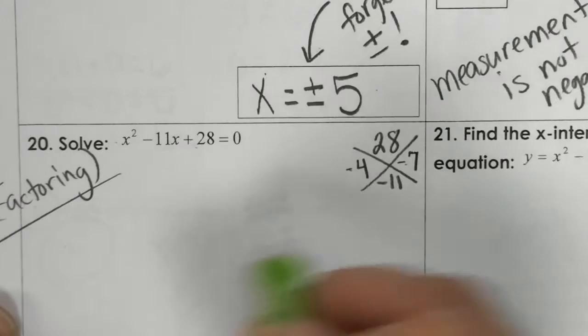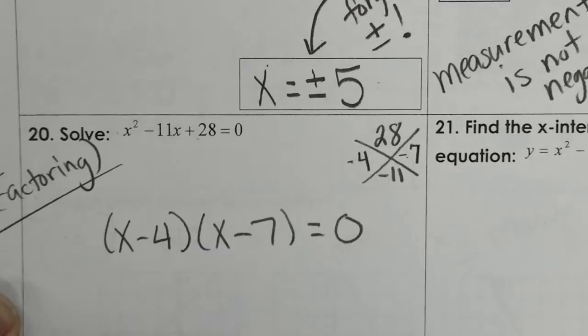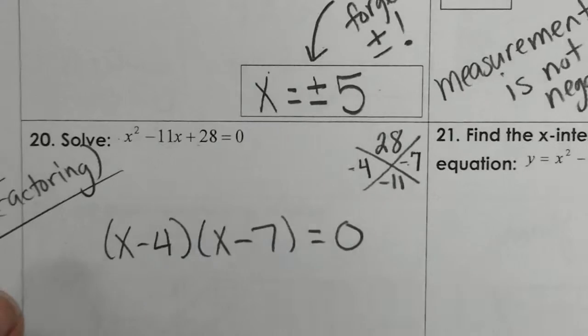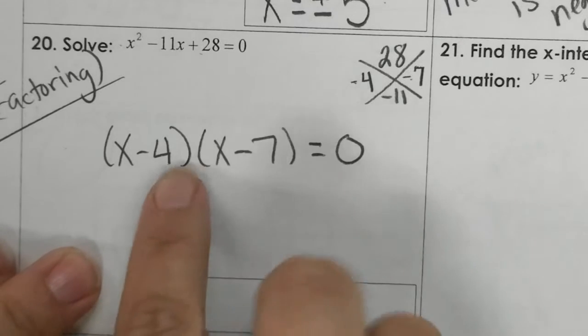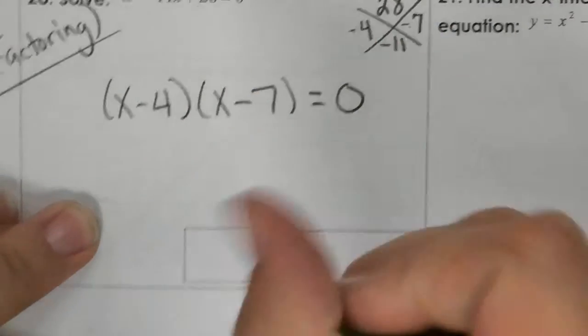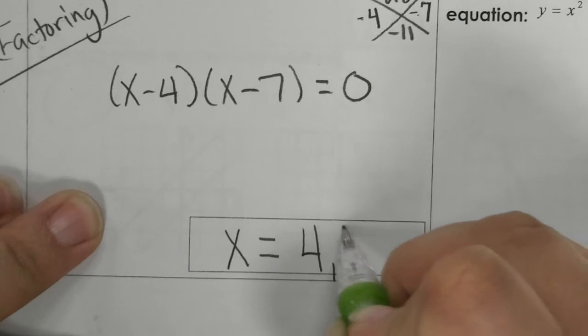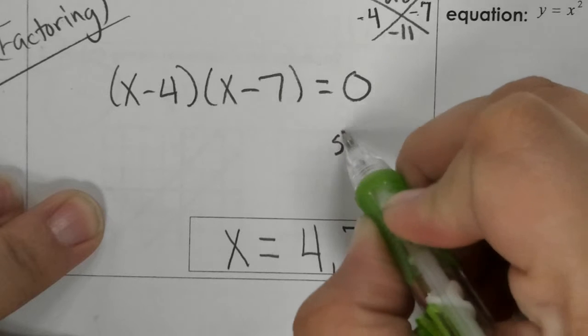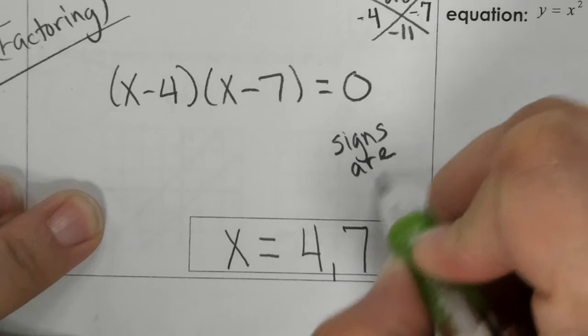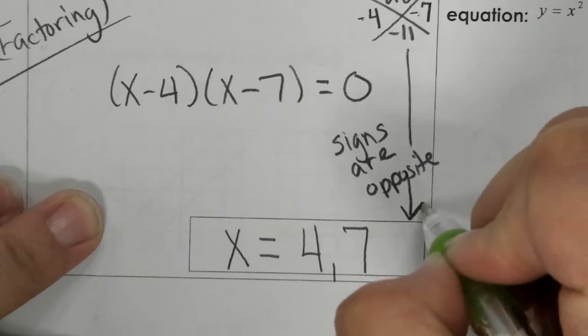Now I would write x minus 4, x minus 7, equals 0. In class we have discussed many times that when you're just having regular x factor and you have to solve it, your answer is the opposite of these numbers. So if my two factors are negative 4 and negative 7, I know that my actual solution is positive 4, positive 7. Because the signs are opposite going from here to here.